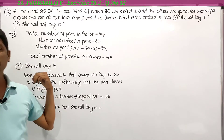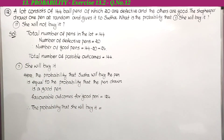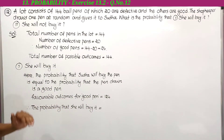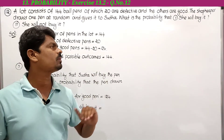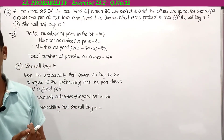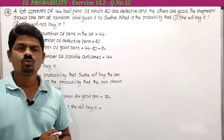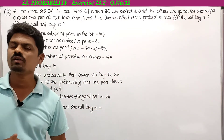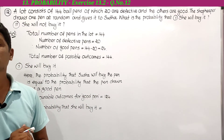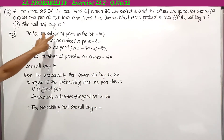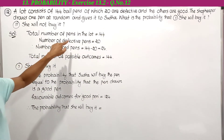This is the 12th problem in exercise 13.2. A lot consists of 144 ball pens, of which 20 are defective and the others are good. The shopkeeper draws one pen at random. Among 144 pens, 20 are defective, therefore the remaining pens are good pens.